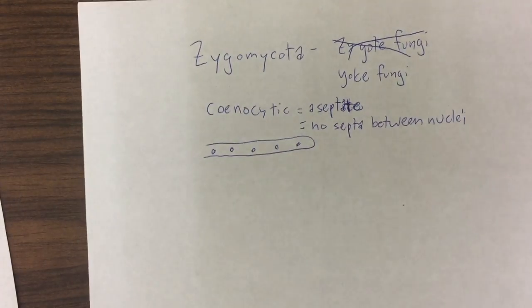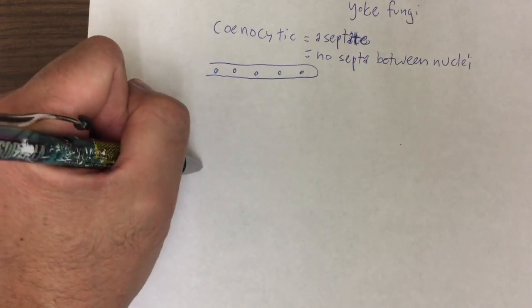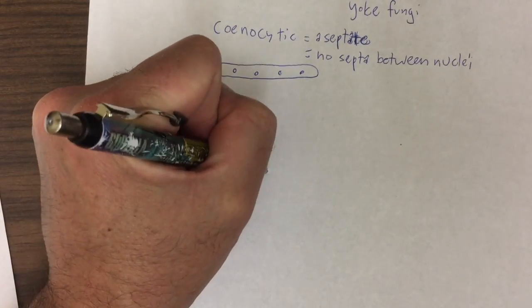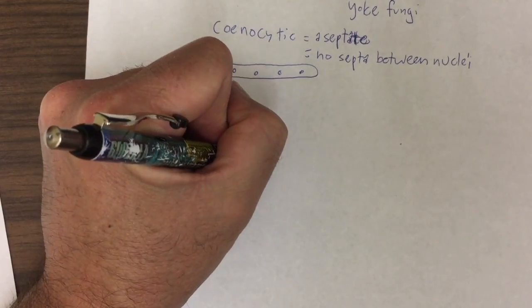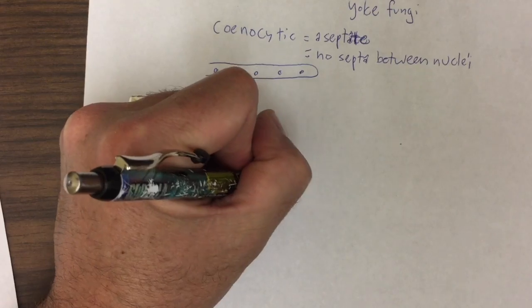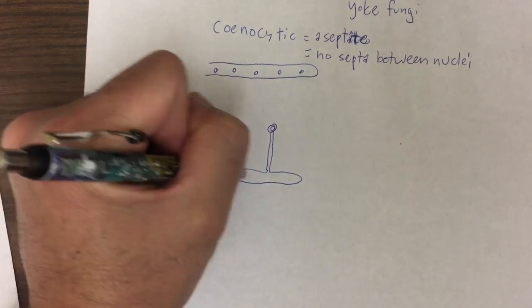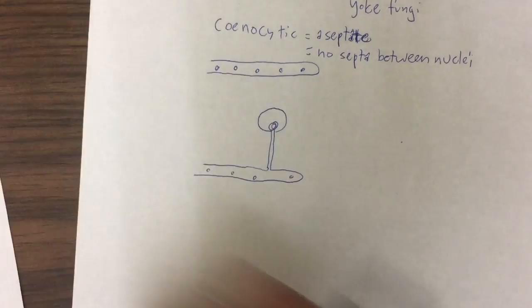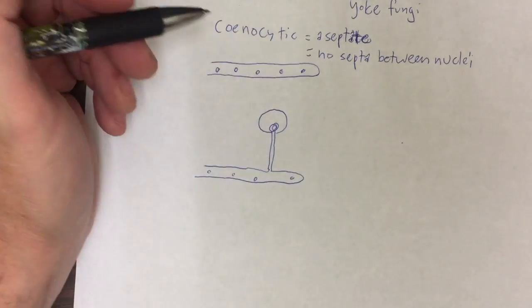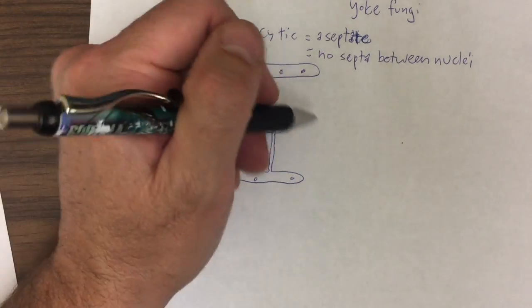Okay, so if we were to draw a mycelium of a zygomycete, we've made up of lots and lots of these aseptate hyphae with nuclei in them, and then every now and then, when there are enough resources around,